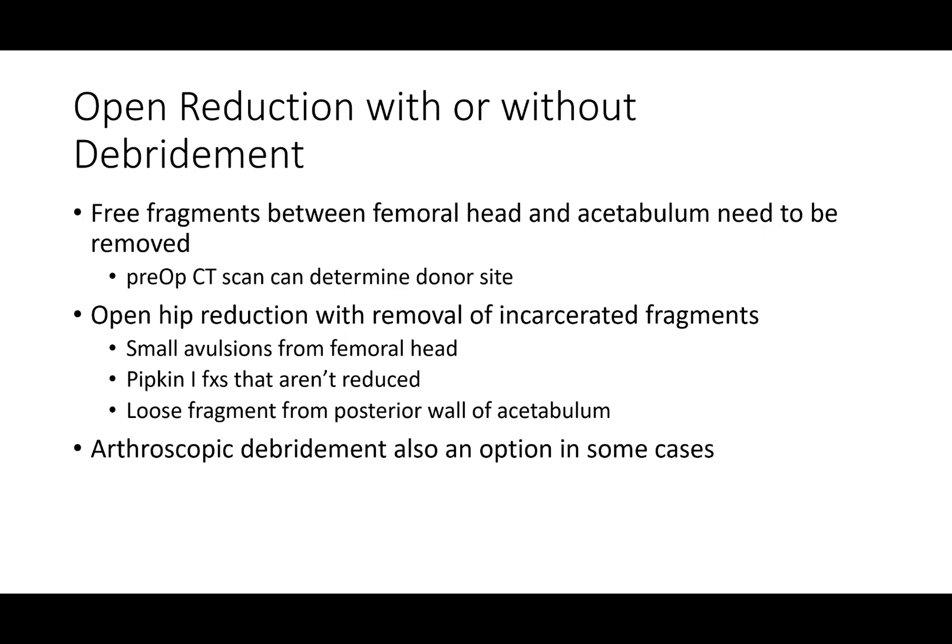You could do open reduction with or without debridement if there are free fragments in the joint that need to be removed. You would do an open hip reduction and removal of incarcerated fragments. These could be small avulsions, Pipkin 1 fractures that aren't reducing, or loose fragments from the posterior wall. Sometimes arthroscopic debridement could be an option if you have that capability at your center.